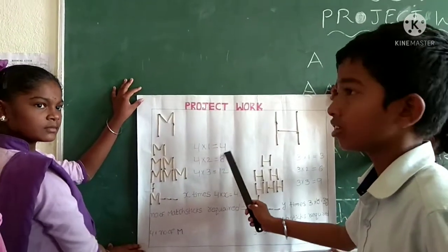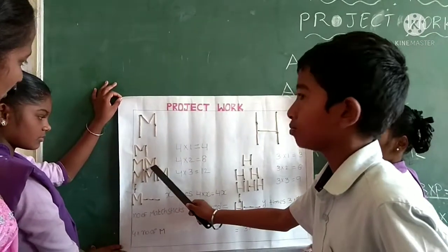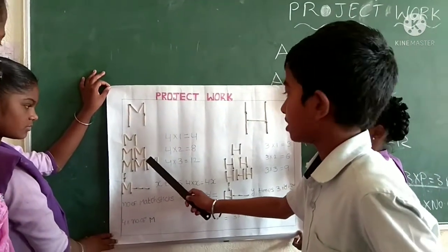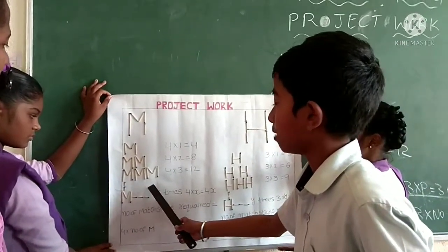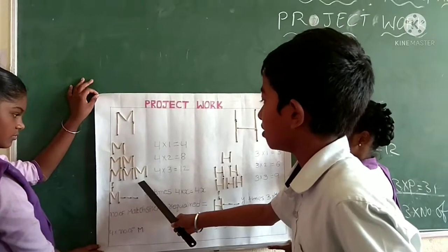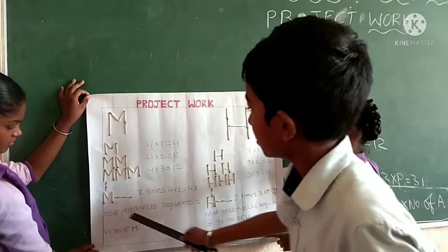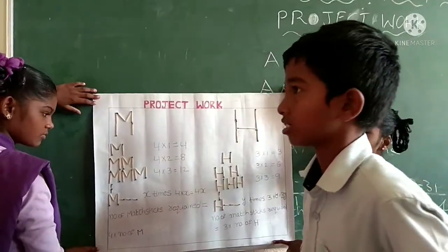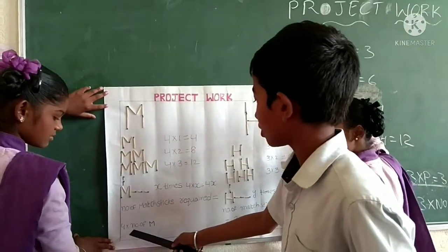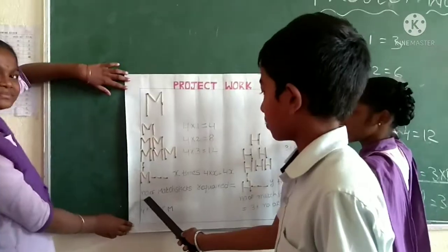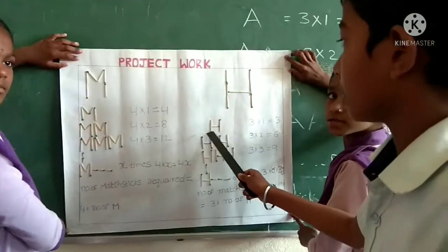For making 1 M, 4 into 1 is equal to 4. For making 2 M alphabets, we need 8 matchsticks — 4 into 2 is equal to 8. For making 3 M alphabets, we need 4 into 3, equal to 12. For making 4 alphabets, the making rule is 4 into the number of M. Number of matchsticks required is equal to 4 into number of M.